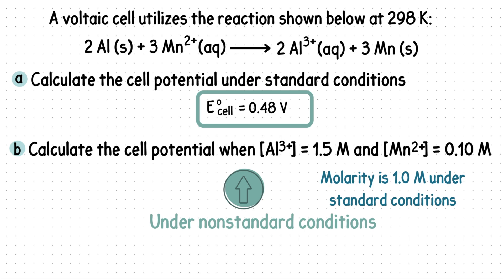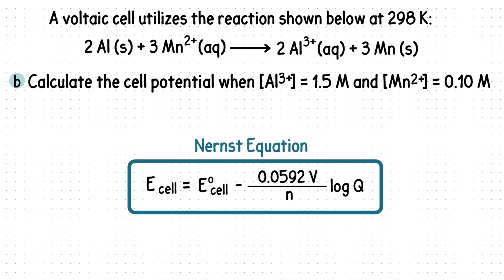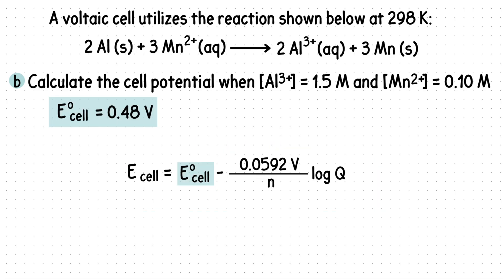To find the cell potential under non-standard conditions, we must use the Nernst equation. Where this refers to the cell potential under standard conditions, which is what we previously found in Part A, this n refers to the number of moles of electrons, and Q is the reaction quotient.